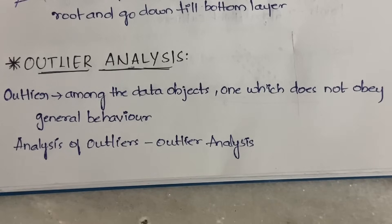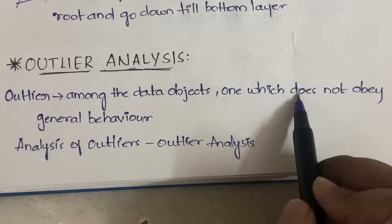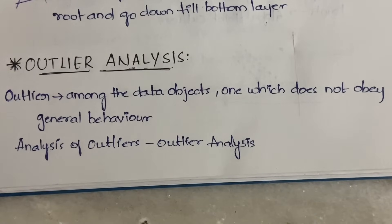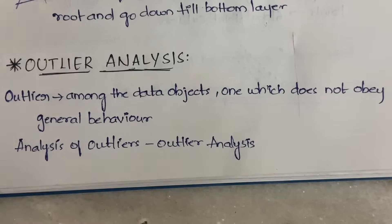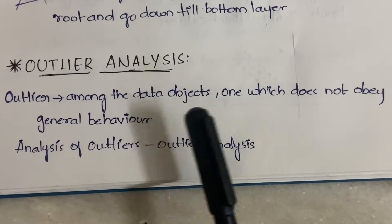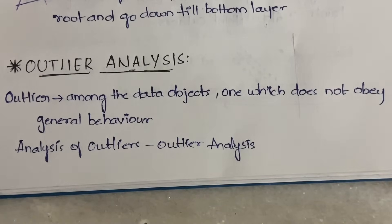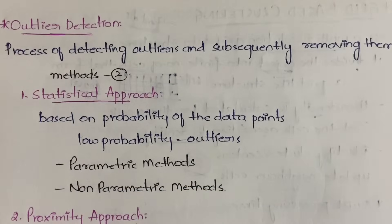By watching the previous videos in data mining, you would have come to an understanding that an outlier is nothing but an abnormality among the data objects — the one which will not obey the general behavior. For example, suppose everybody is walking in the forward direction; if any one person is walking in the reverse direction, then that person is an outlier. When compared to the common behavior, if anybody is behaving against it, it is called an outlier. The analysis of these outliers is called outlier analysis.